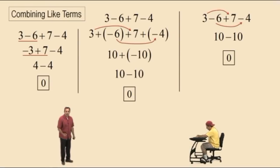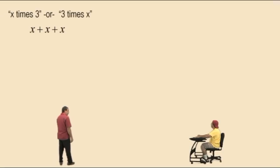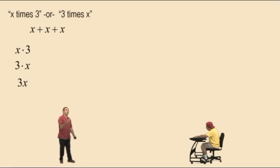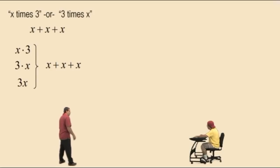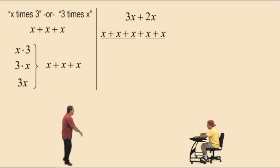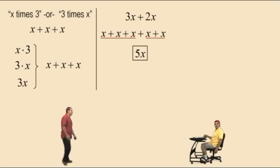Now before we move on, let's talk about variables. Okay Charlie, here's x plus x plus x. What does this mean — x times 3 or 3 times x? Well, both are correct because by the commutative property for multiplication, x times 3 is the same as 3 times x, which is simply written 3x. Remember, 3x means 3 times x, which is x plus x plus x. So now, 3x plus 2 more x is 5x. It's like if you have 3 apples and somebody gives you 2 more apples, how many apples do you have? 5 apples.